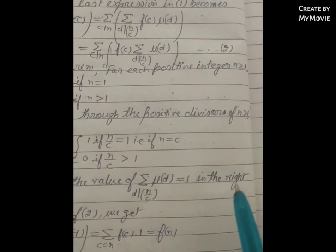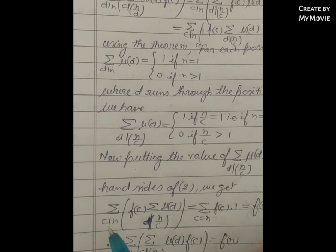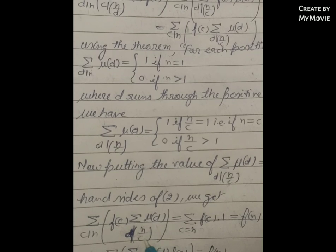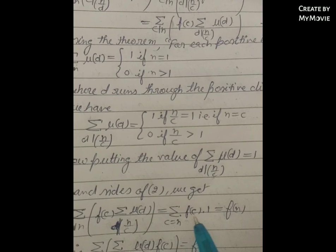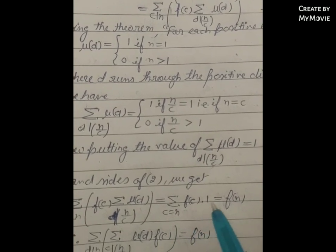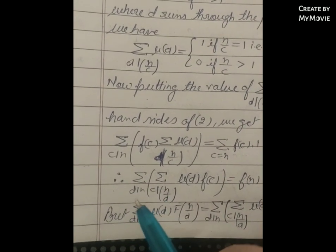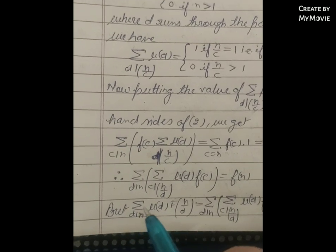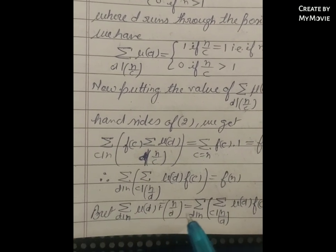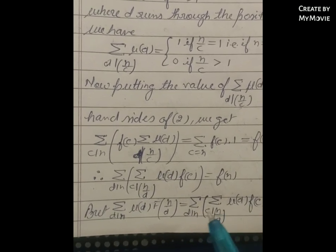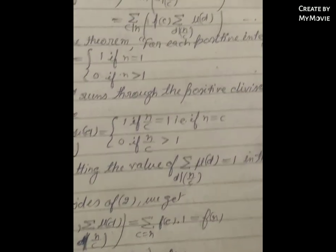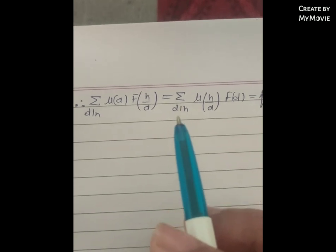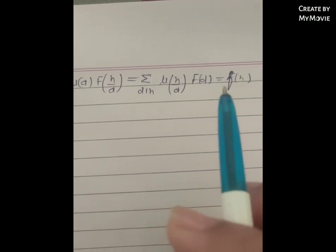Putting the value Σ_{d|n/c} μ(d) = 1 (only when c = n) into the right-hand side, we get Σ_{c|n} f(c) · Σ_{d|n/c} μ(d) = f(n) · 1 = f(n). Therefore Σ_{d|n} μ(d) F(n/d) = Σ_{d|n} μ(n/d) f(d) = f(n), which completes the proof.